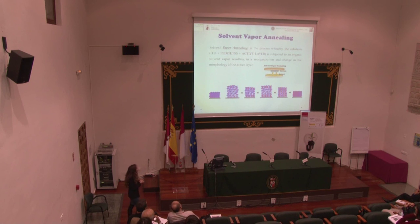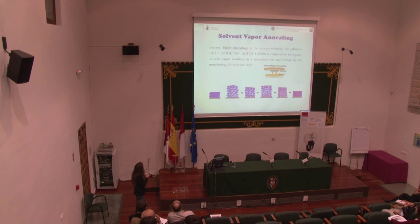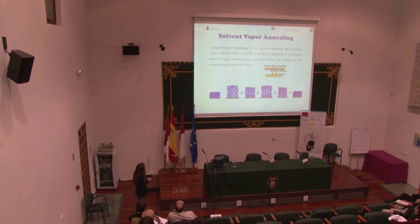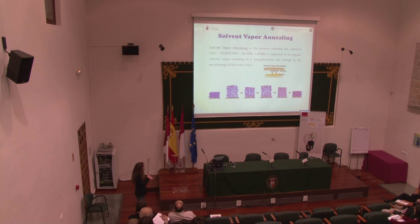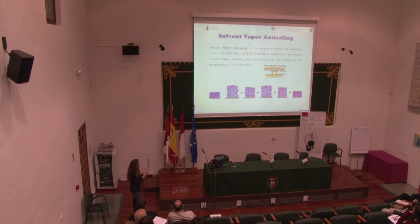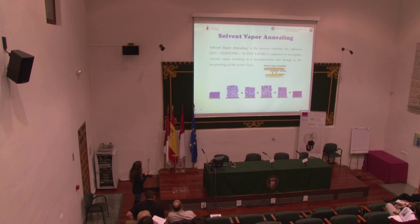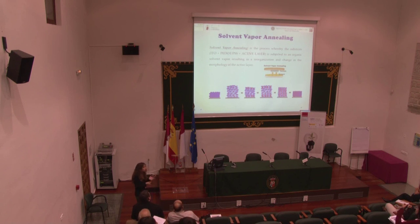The solvent vapor annealing is the process whereby the substrate — formed by ITO, PEDOT:PSS, and the active layer, without the lithium fluoride and aluminum — is subjected to an organic solvent vapor in a closed vessel. In this process, the morphology of the active layer changes, the organization increases as we can see in the image, and normally the final efficiency improves.